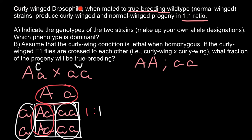Question B: assuming that the curly-winged condition is lethal when homozygous, if the curly-wing F1 flies are crossed to each other, what fraction of the progeny will be true breeding? We need to cross the heterozygous genotype 'Aa' with itself — Aa × Aa.